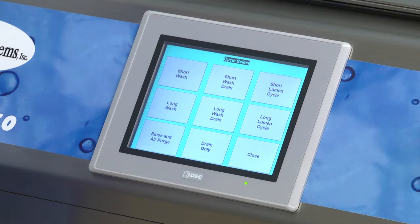From this menu, you can choose from two basket cycles. The short cycles have an 8-minute ultrasonic duration and long cycles have a 13-minute ultrasonic duration. Short Wash and Long Wash will wash but not drain for times when you want to conserve and reuse water. Short Wash Drain and Long Wash Drain will drain the basin after the wash cycle.